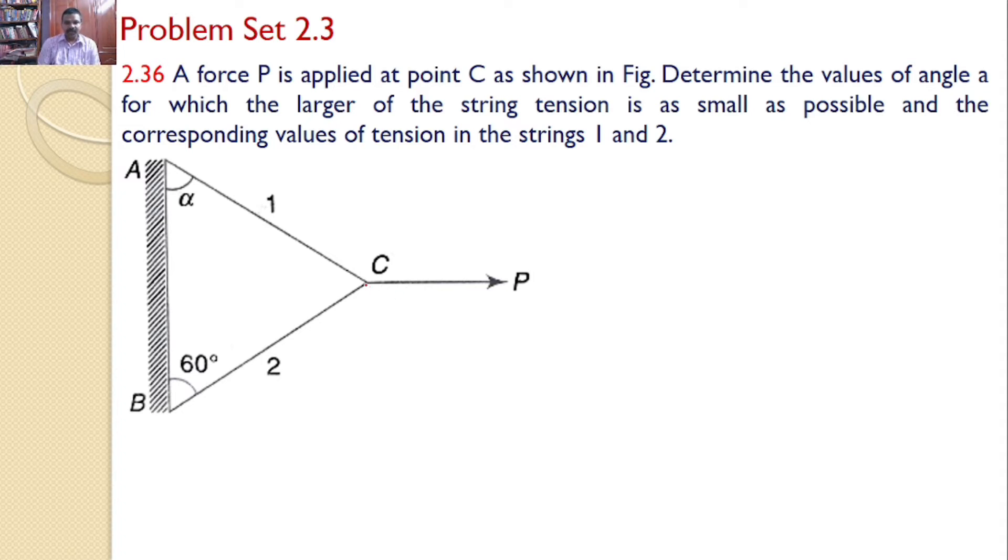Let us consider the free body diagram at point C. Two strings 1 and 2 are connected and a force P is applied at point C. So the various forces acting at point C are the force P towards right side, the force along the string 1 that is S1 and it is away from point C, the force along string 2 S2 away from point C. Now we can transfer all these three forces onto a separate xy plane, the force P, the force S1 and the force S2.